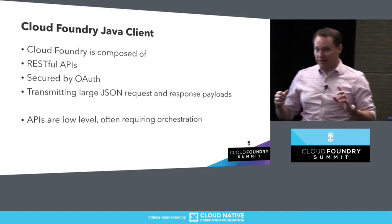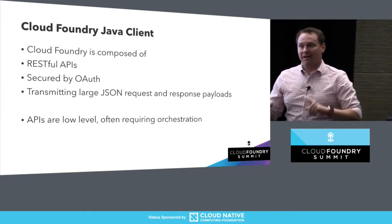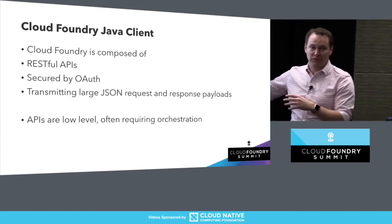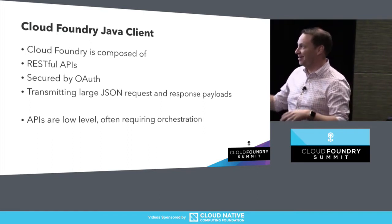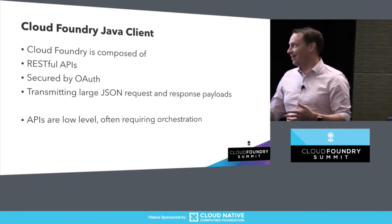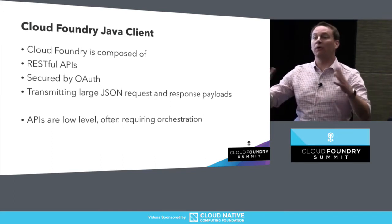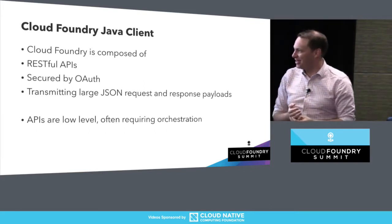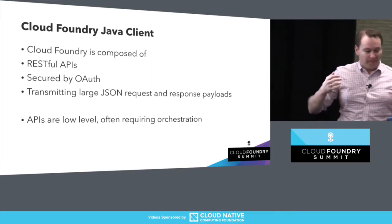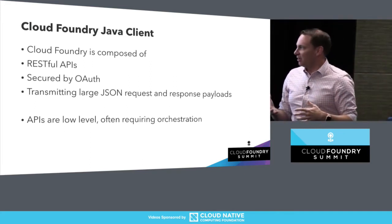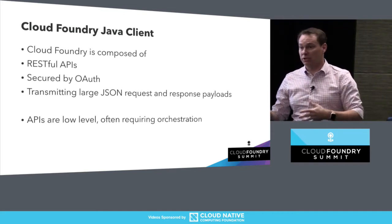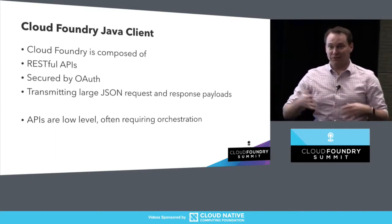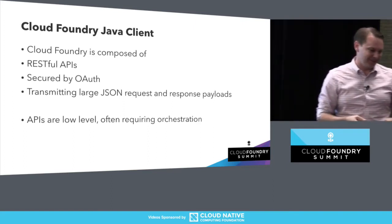We're going to discuss this through the Cloud Foundry Java client. Cloud Foundry is composed of about 550 different RESTful APIs secured by OAuth. The Java client has become important because these low-level APIs often need to be orchestrated. For example, CF Push is, at minimum, 13 different network requests trying to get all of this stuff coordinated.